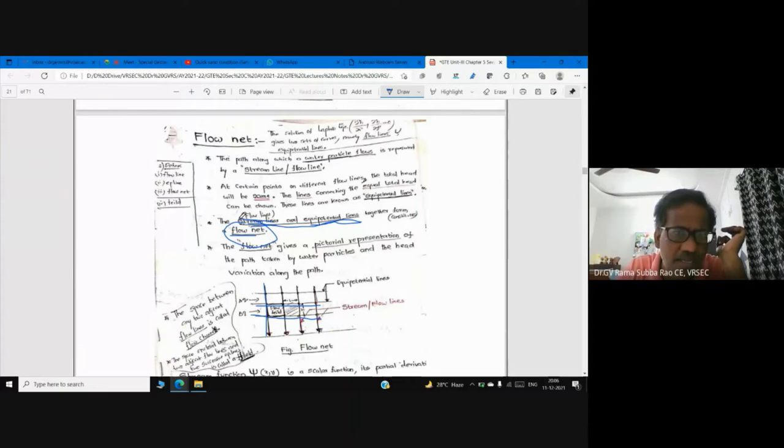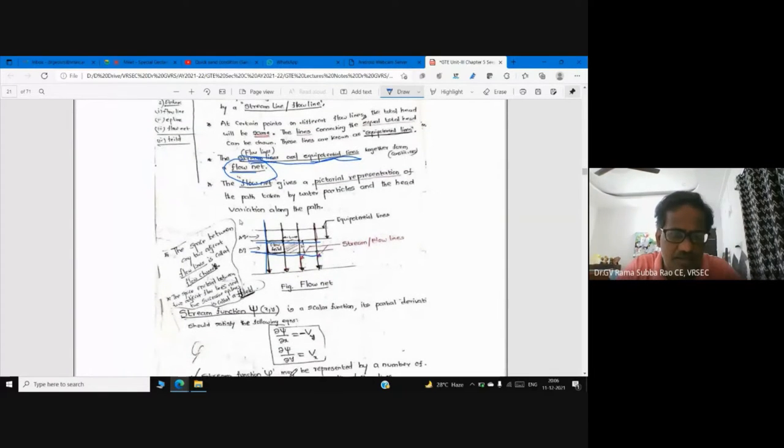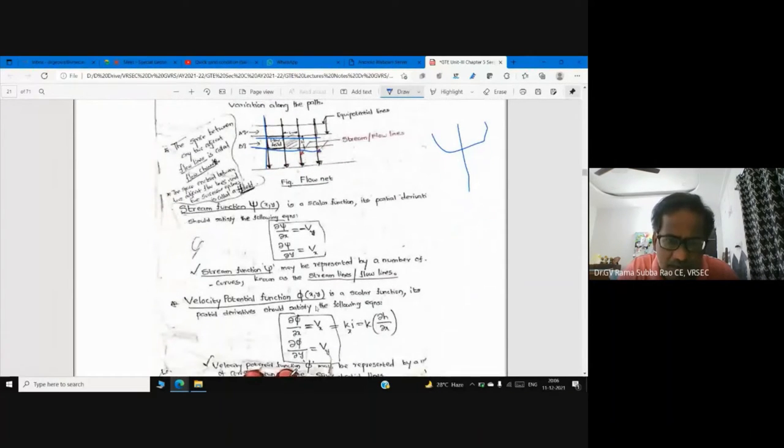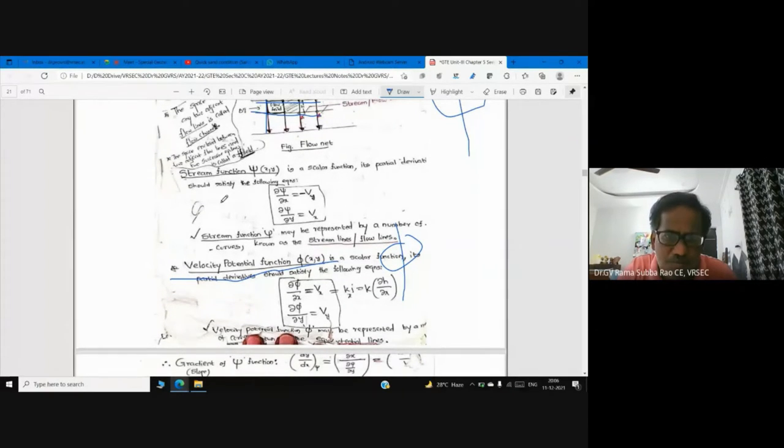Flow net is a combination of stream lines and equipotential lines. We use psi as designation for stream function and phi for velocity potential. In geotechnical engineering, the combination of stream lines and equipotential lines, the graphical representation of stream lines and equipotential lines, is called flow net.